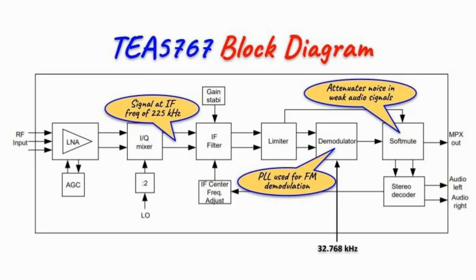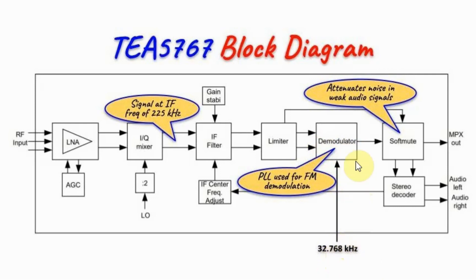A block diagram of the TEA 5767 is shown here. We have at the input the RF signal, which is the FM signal, applied to a low-noise amplifier that has an automatic gain control circuit. The output of the LNA is fed into a mixer that gives us at the output a signal at intermediate frequency of 225 kHz. The intermediate frequency signal is then fed into a demodulator, which uses phase-locked loop to extract the audio signal. The output of the demodulator is then fed into a stereo decoder that gives us the left and right channels of the stereo signal.